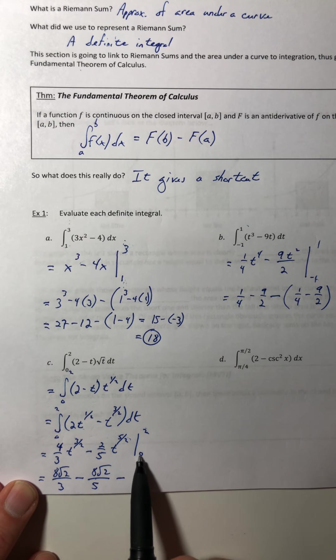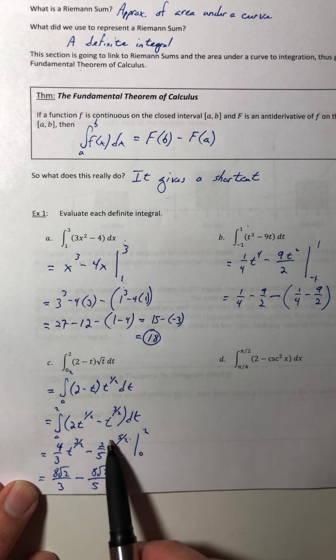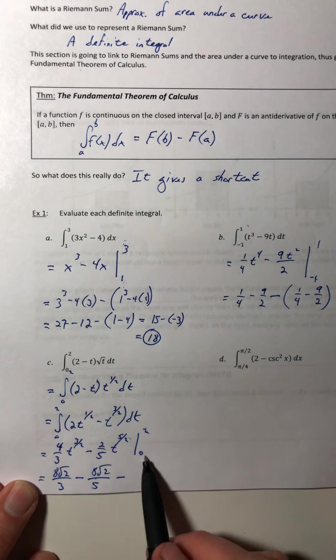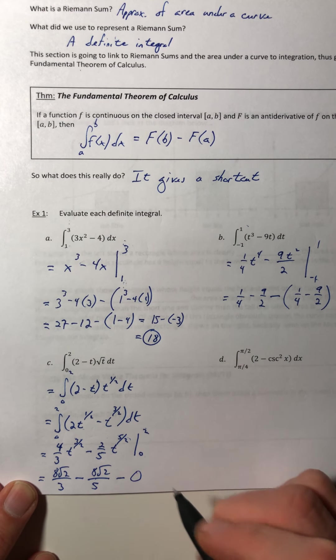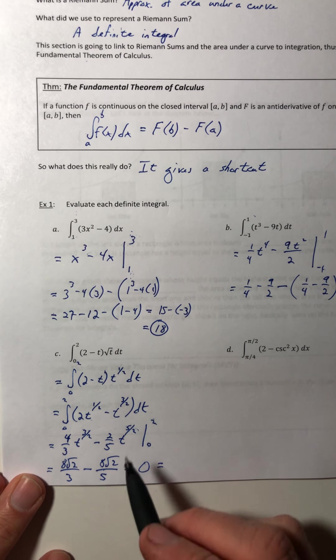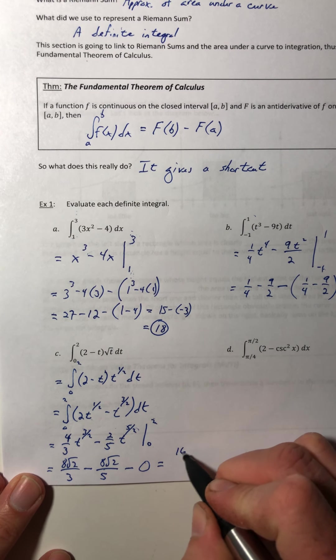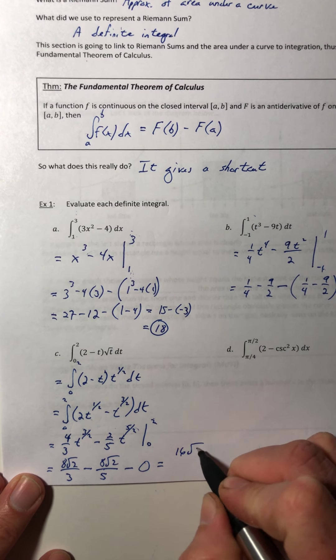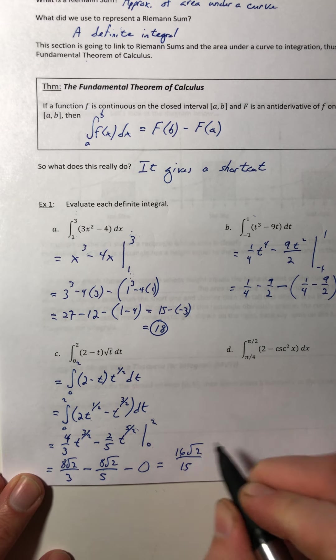And then the nice thing about plugging in 0 is that it usually knocks out the terms with that variable. So the 0 knocks those off, and so just combine the two fractions. So 16√2/15.